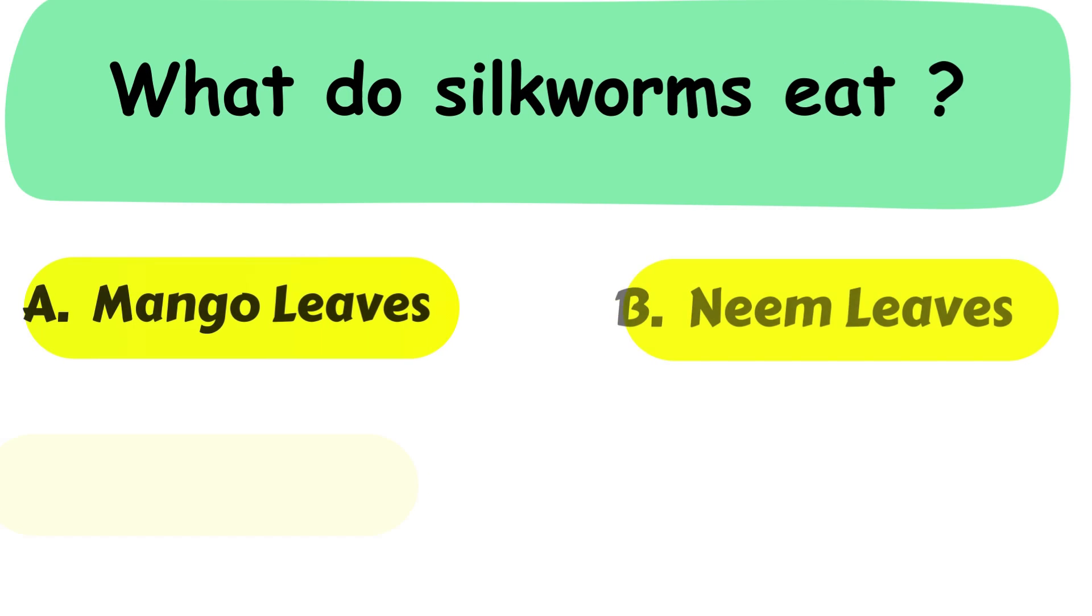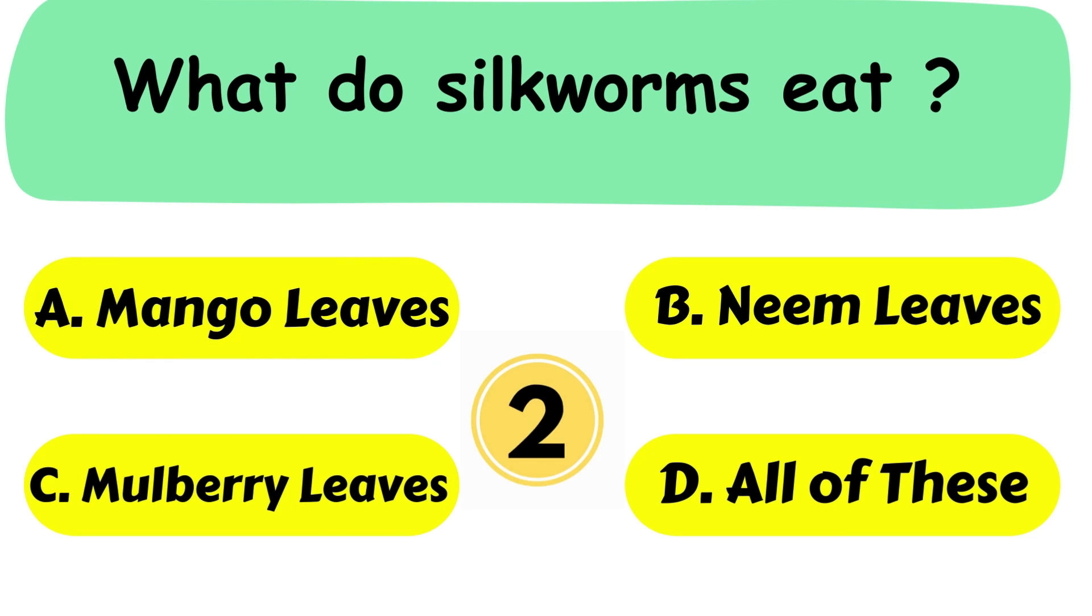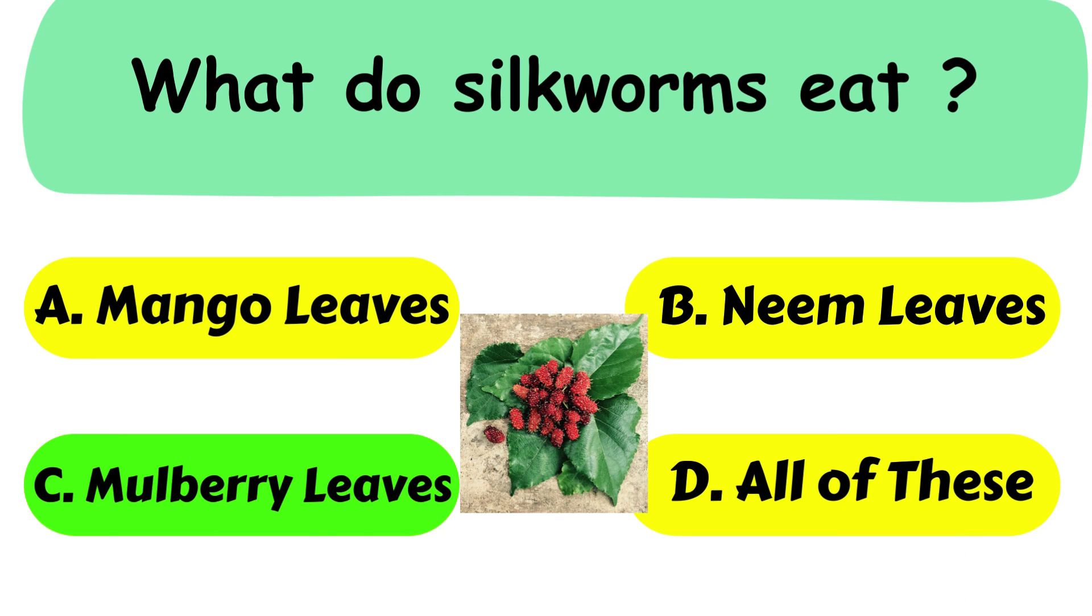Question No. 21. What do silkworms eat? A. Mango leaves. B. Neem leaves. C. Mulberry leaves. Or D. All of these. Correct answer is option C. Mulberry leaves.